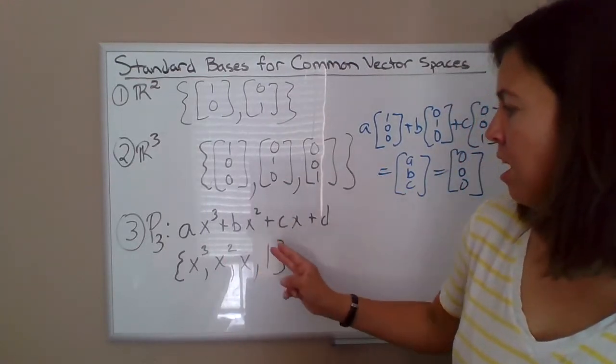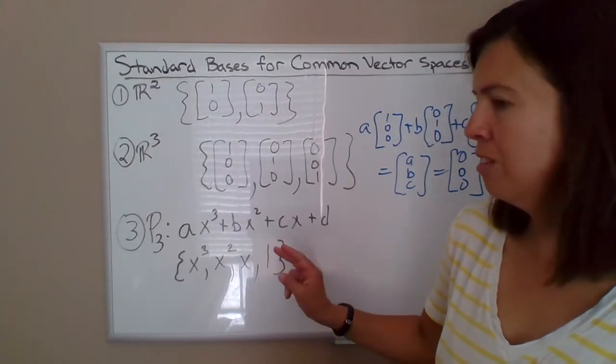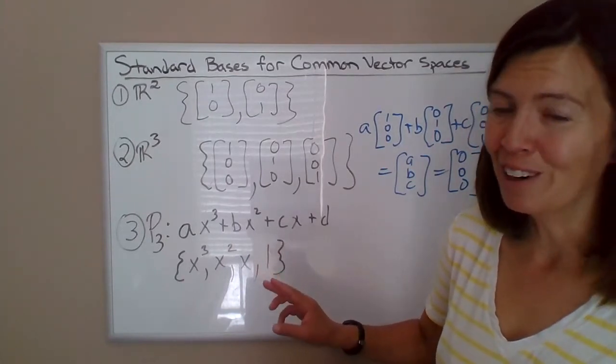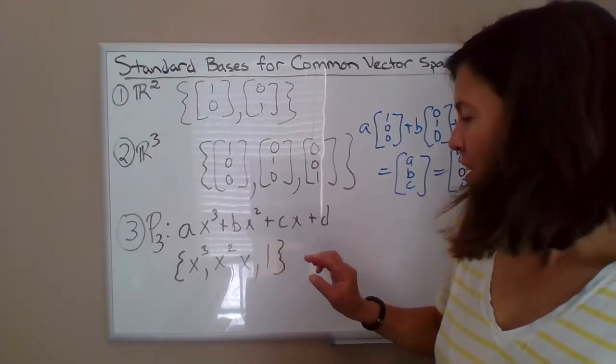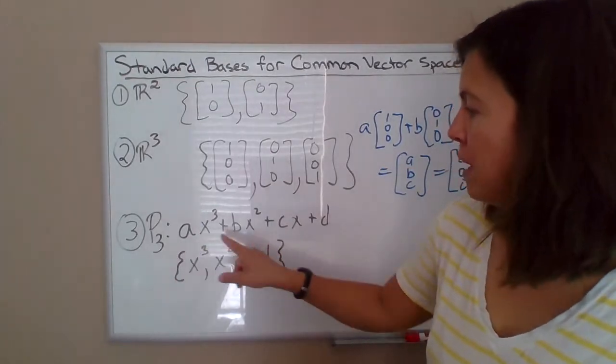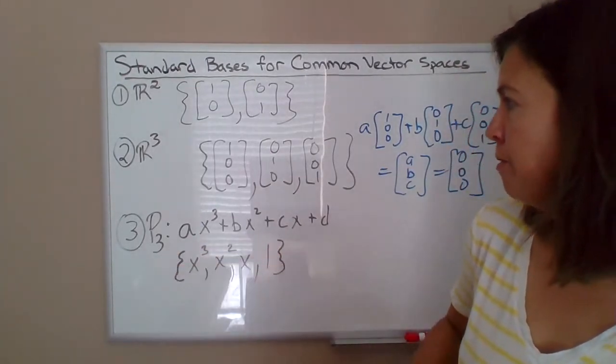So they're linearly independent. So those are the two criteria. They're linearly independent and they span all of P³.